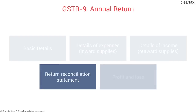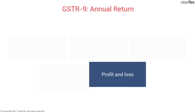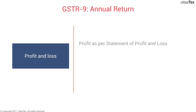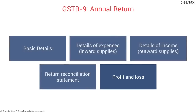The last section is profit and loss. When talking about your business as a whole and not individual transactions, you have to give the figure of profit and loss — that's where the tax comes from. You'll have to state the profit as per the statement of profit and loss: your gross profit, your profit after tax, and your net profit. With that, we've discussed all the details that GSTR-9 requires — basic details, expenses, income, reconciliation, and profit and loss.